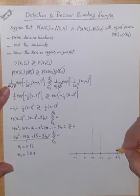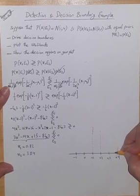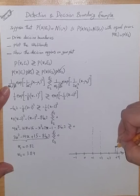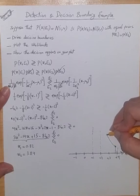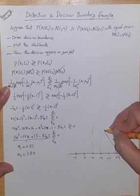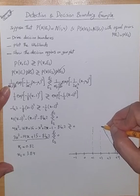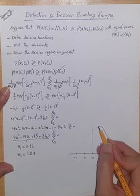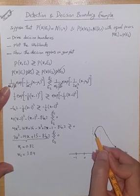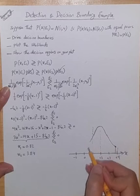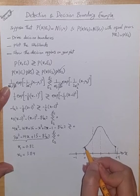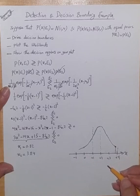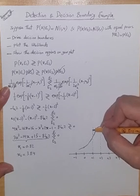So, let's say at 3.84, these two intersect. So, probably, we have something like this. And for the first guy, we have something like this.